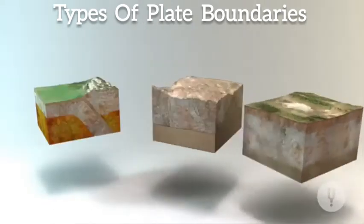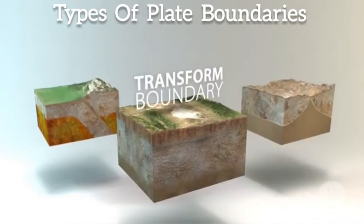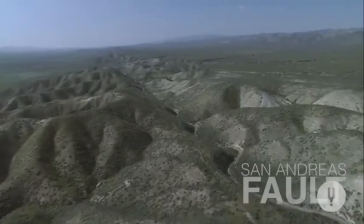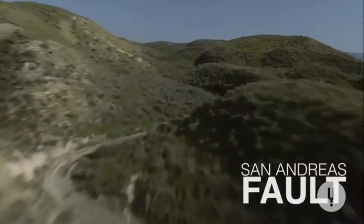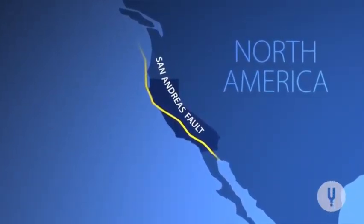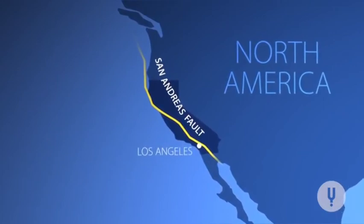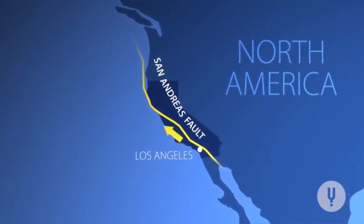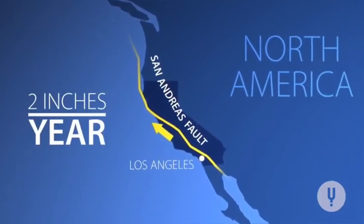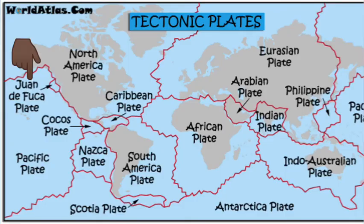Starting with the transform plate boundaries: these plate margins are also referred to as a conservative zone, whereby neither plate is destroyed nor constructed during interaction. The two plates are sliding past each other, moving in different directions. An excellent example of such a conservative zone is found where one plate and the North American plate interact.